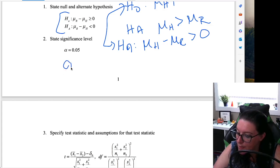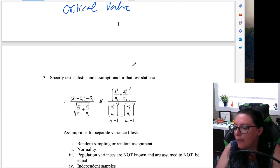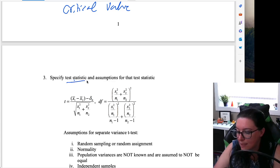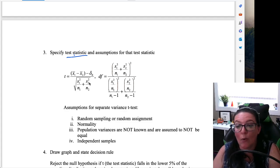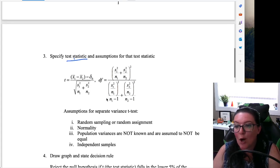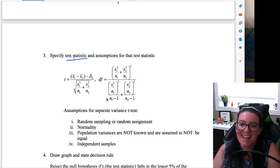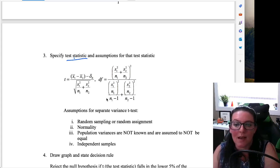Ultimately, that is going to give us our critical value. And then we're going to compare that critical value to our test statistic. So we're going to need to specify what test statistic we're going to use and the assumptions that go with that test statistic. In this particular example, you can see that that's a complicated t-test. That is the separate variance t-test. And if you're using the separate variance t-test, it has its own set of assumptions.